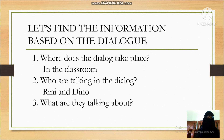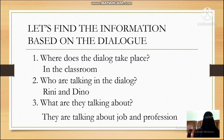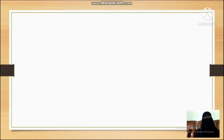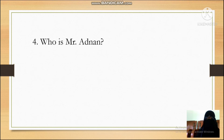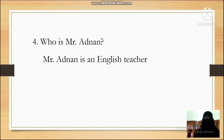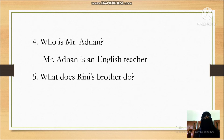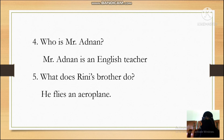And number three: what are they talking about? Yes, there is a teacher, there is a farmer — it is a kind of profession. Your answer is right — they are talking about jobs and professions. Number four: who is Mr. Adnan? Mr. Adnan is an English teacher. Number five: what does Rini's brother do? Rini's brother flies an airplane — he is a pilot.